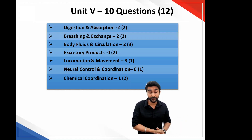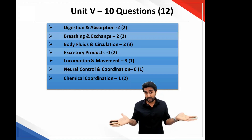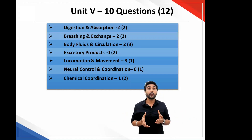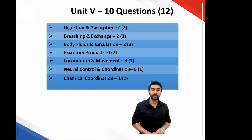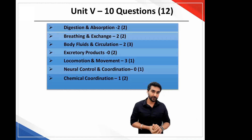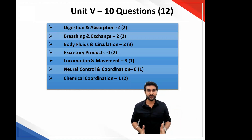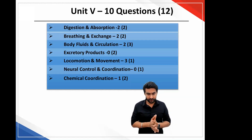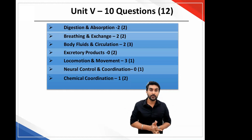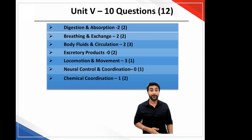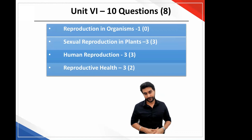Last year they had asked 2 questions on excretion and 1 on nervous system — this time they didn't ask any. Locomotion had 3 questions this year, which is a bit unusual considering the size of the chapter. Otherwise, digestion, breathing and exchange, and the circulation chapter had an even distribution of 2 questions each. The only chapters missed out this year were the two I already mentioned — so unit five is another unit I would call neglected.